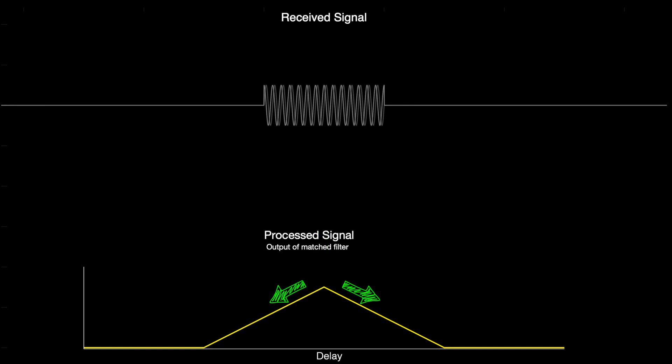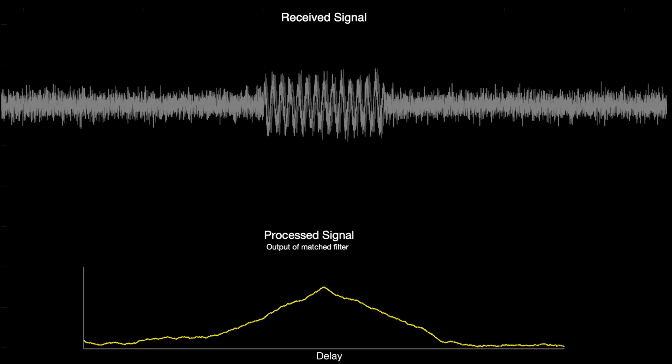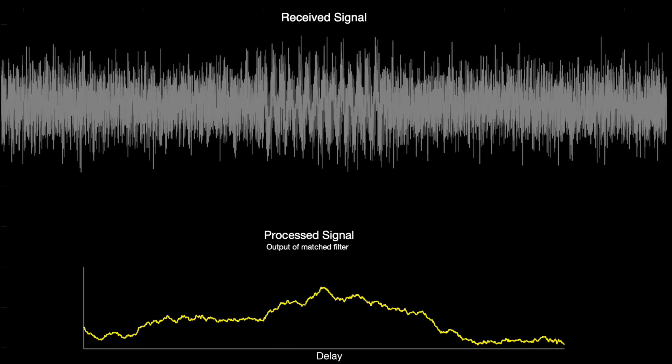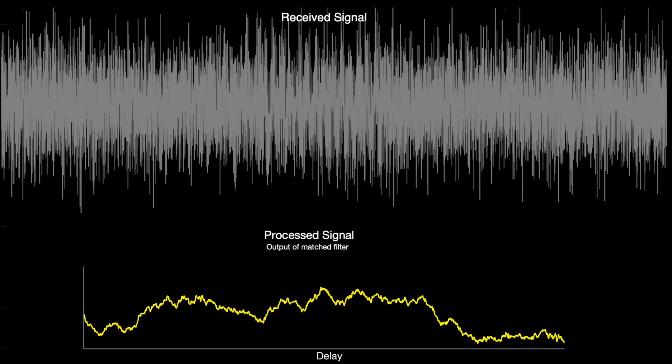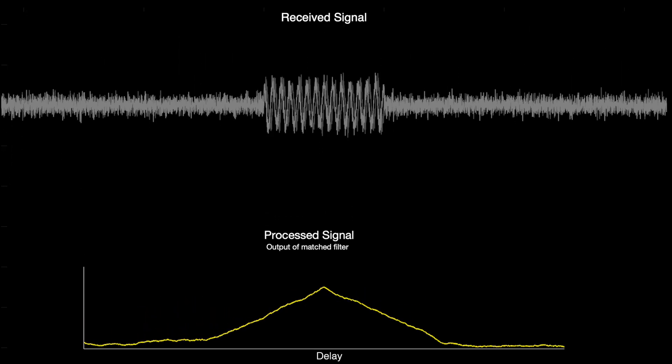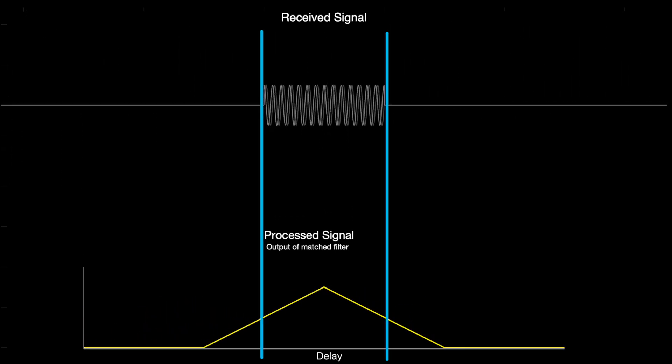Now, why is this important to point out? Well, for one, the shallow nature of this triangle means that noise can easily raise the correlation enough to produce a false peak near the real peak. And that false peak would cause us uncertainty in knowing the delay. But possibly more importantly is that this triangle is still functionally as wide as the original pulse. And that affects the resolution of the radar.